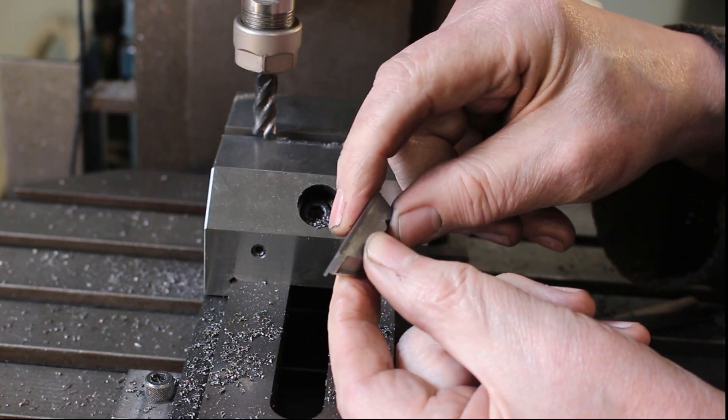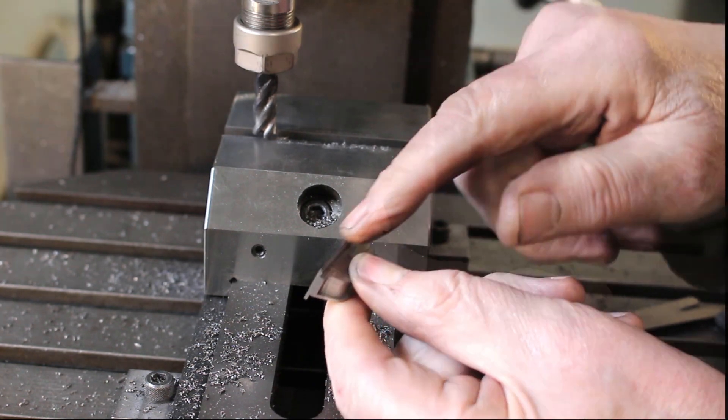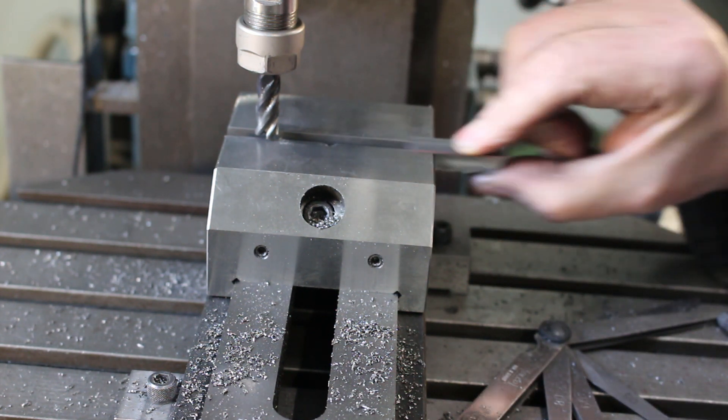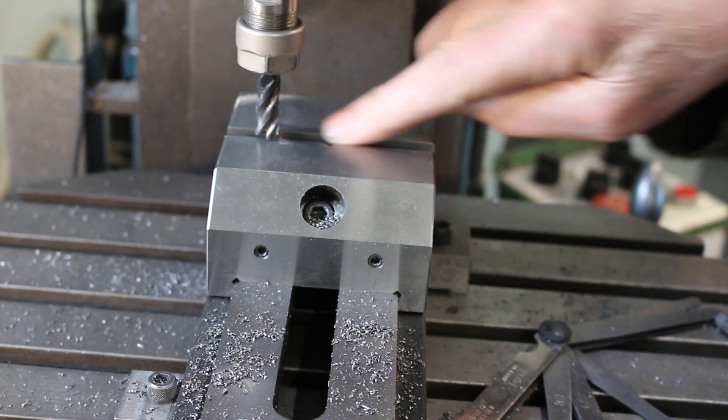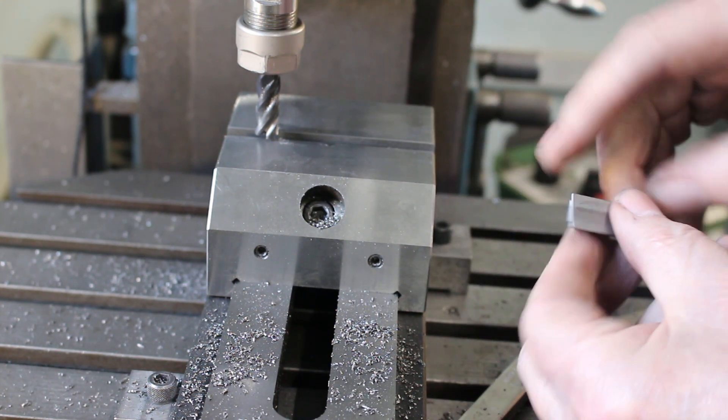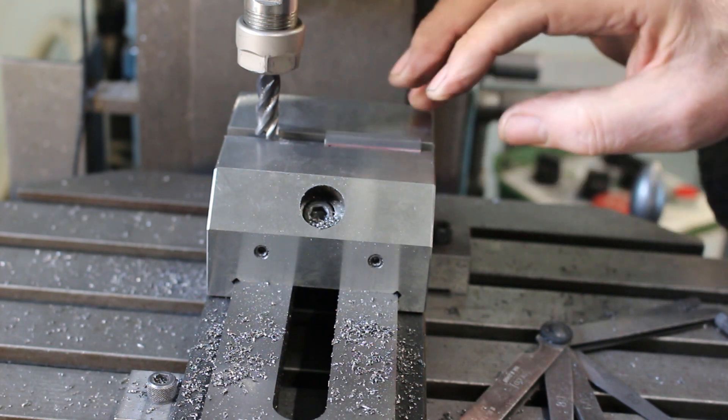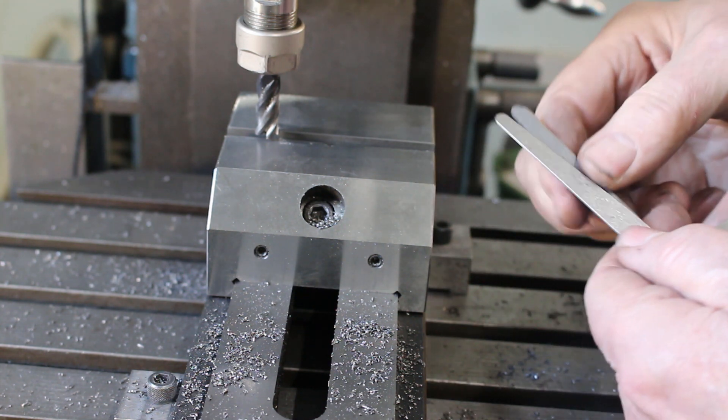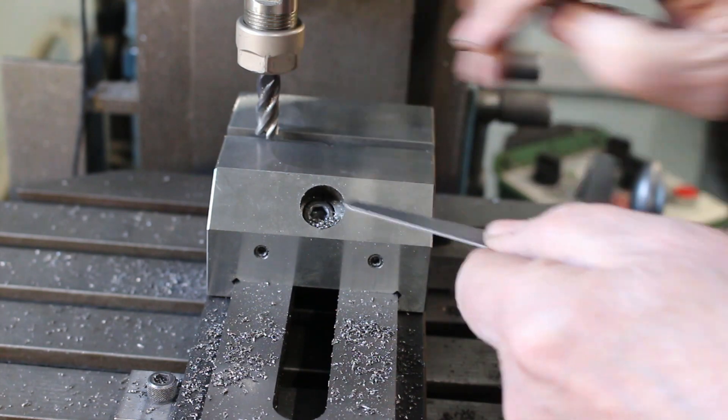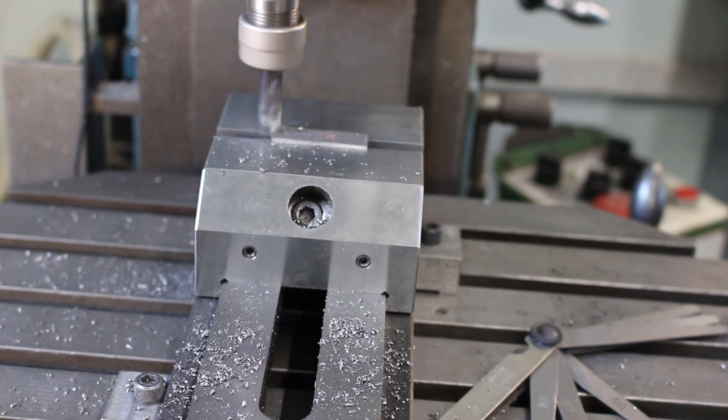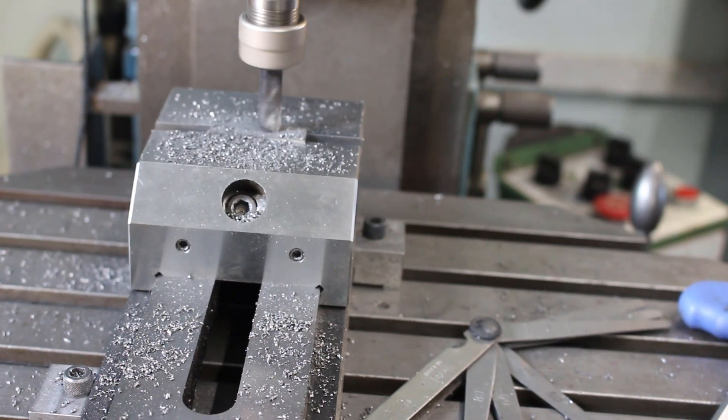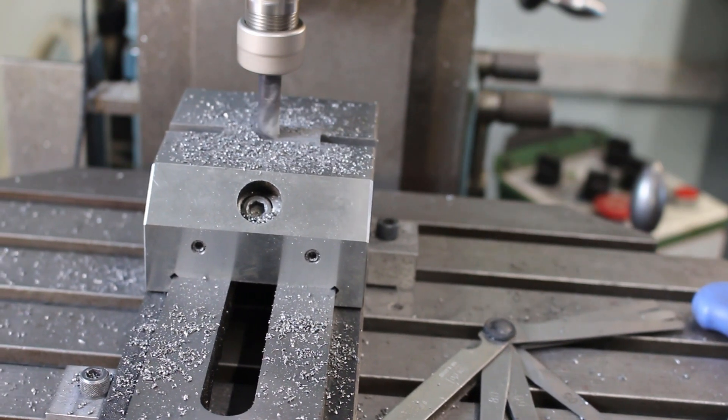So what I'm doing now is just facing off this face here so that this flange is one millimeter thick. I'm using my toolmaker's vise to make sure this goes down flat. On the top of the vise I've actually stoned the corner to take off the sharp edge, otherwise it may have prevented the component going down flat. Then I would get inconsistencies between each one and the thickness of the flange. I'll set the height of the cutter just using feeler gauges.